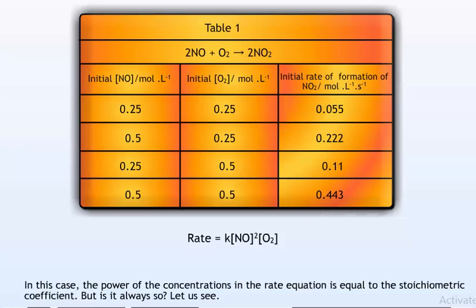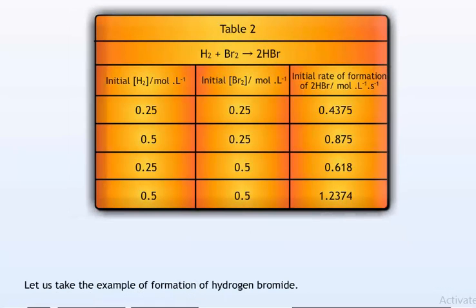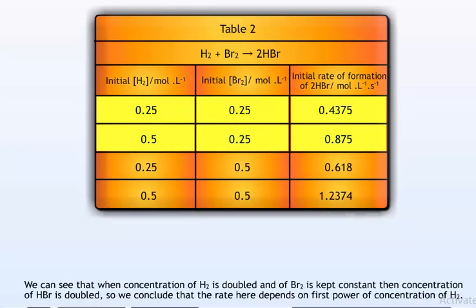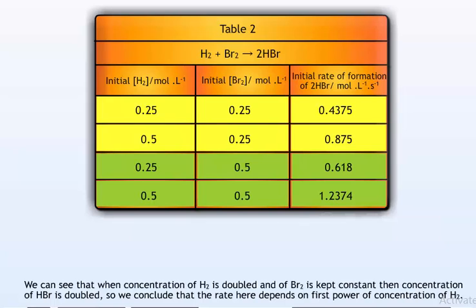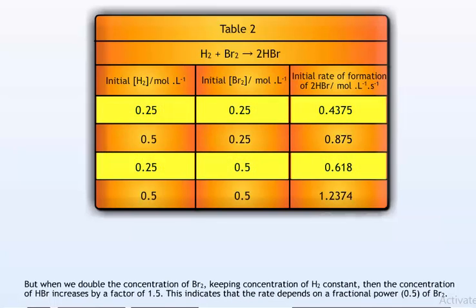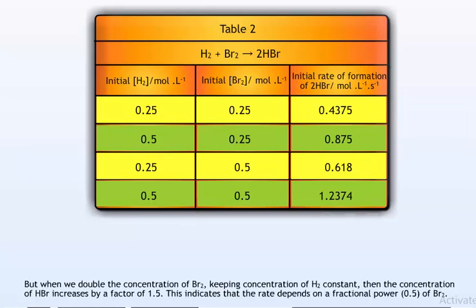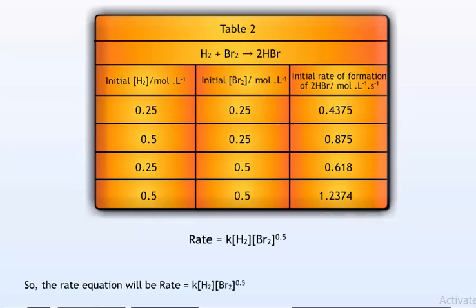But is this always the case? Let us take the example of formation of hydrogen bromide. When concentration of H2 is doubled and Br2 is kept constant, the concentration of HBr is doubled, so the rate depends on the first power of H2. But when we double the concentration of Br2, keeping H2 constant, HBr increases by a factor of 1.5, indicating the rate depends on a fractional power of 0.5 of Br2. The rate equation is: rate equals K into [H2] into [Br2]^0.5. Here the power is not equal to the stoichiometric coefficient.